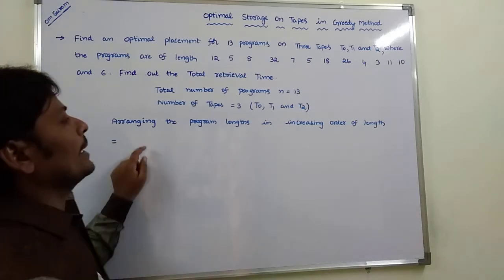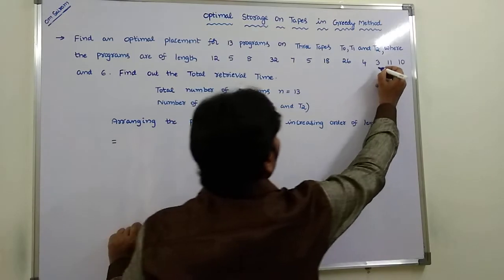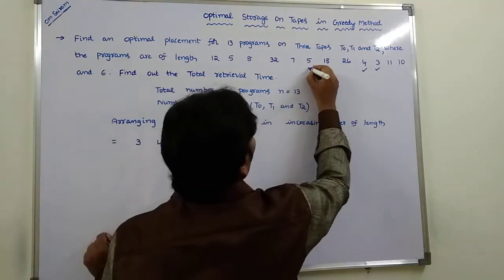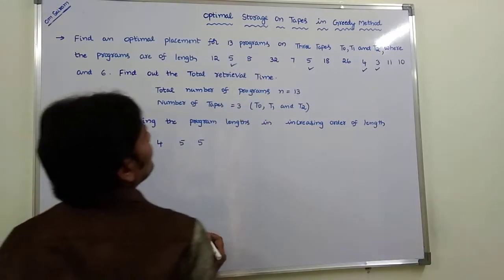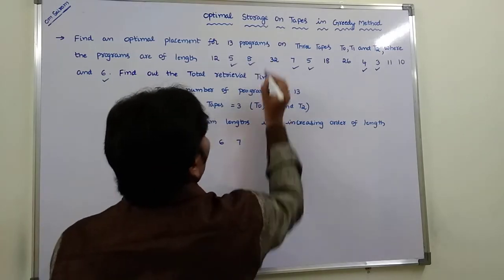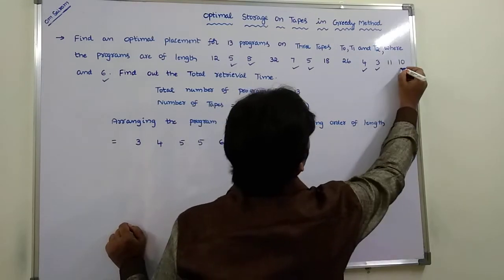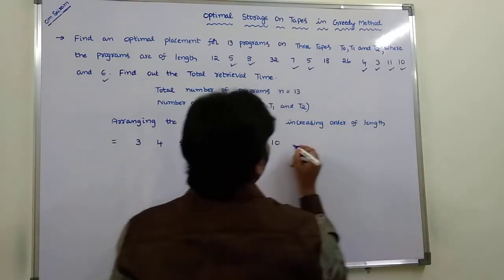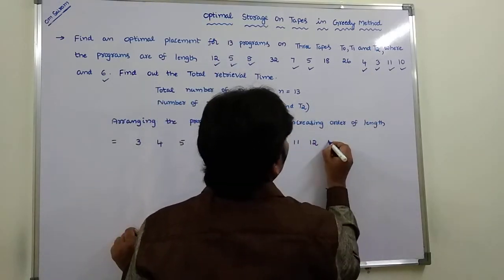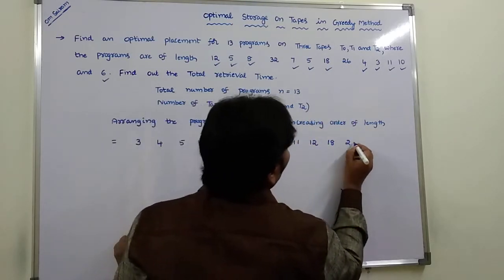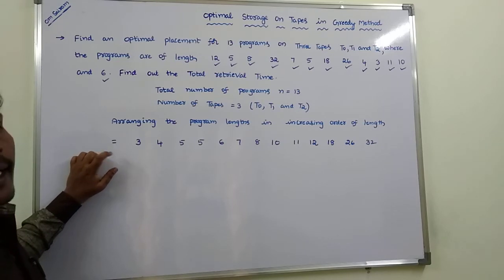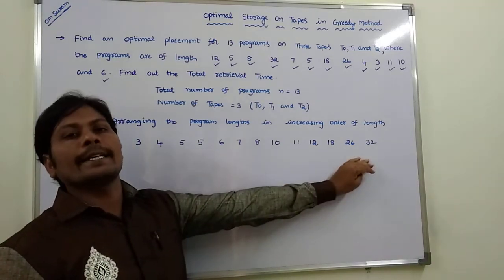After arranging the program lengths in increasing order, the sorted sequence is: 3, 4, 4, 5, 6, 7, 8, 10, 11, 12, 12, 18, 32. This gives us the programs ordered from shortest to longest.